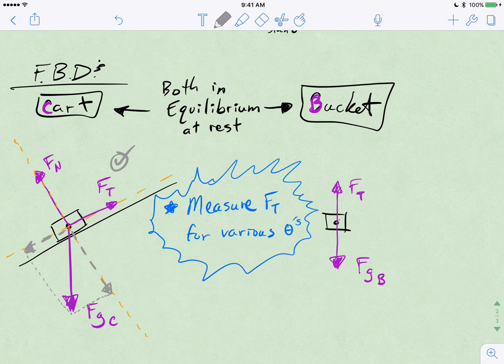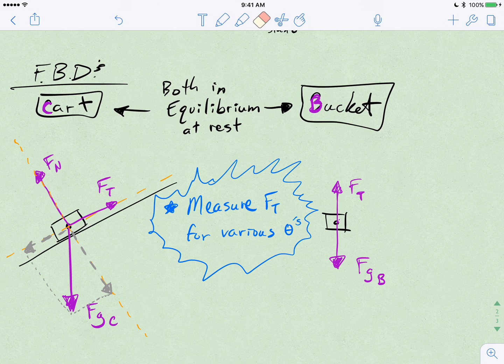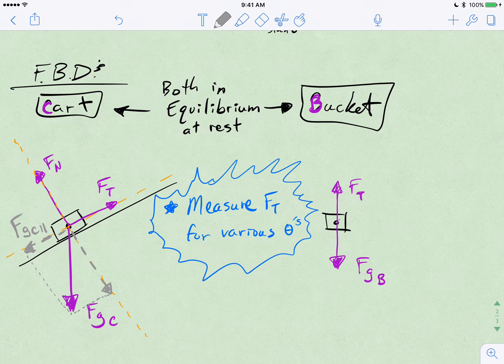And so I've already busted up the FGC into parallel and perpendicular components. And so in light gray, I have these here, and I'm going to label them now FGC parallel to the ramp. That's not an 11. That's a parallel symbol, two parallel lines. And then we have FGC, the weight of the cart, perpendicular. And there's a perpendicular sign. So it's perpendicular to the ramp.